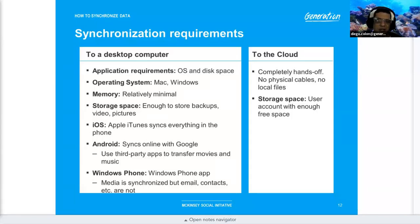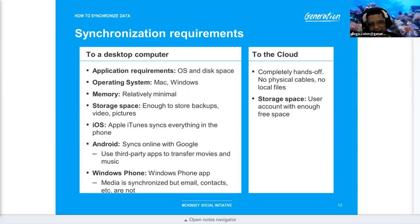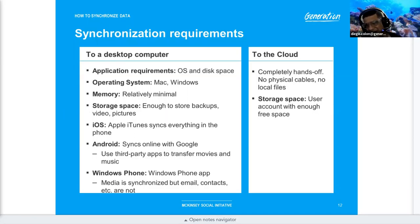Android allows you to sync photos and optionally compress them — not at original size — which effectively gives unlimited uploads in that compressed format. Otherwise, Google gives about 15 GB free storage, and Apple's iCloud gives approximately 5 GB for syncing to the cloud.